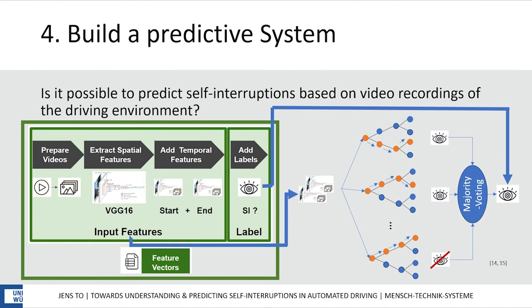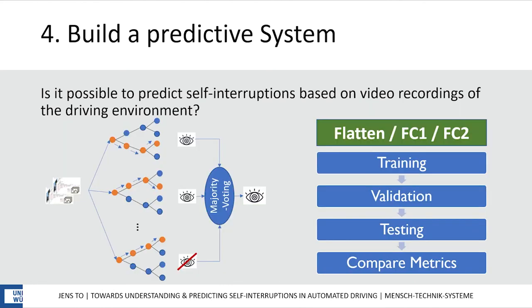Transfer learning has the advantage of getting high accuracies with a very limited amount of data, as in my case. I chose the machine learning model Random Forest to predict self-interruptions because it is suitable for the task and it might help in understanding which features are relevant. To figure out which of the three VGG16 layers are most suitable for accurate prediction, I will train, validate, and test the model with each of them and compare their performance metrics.